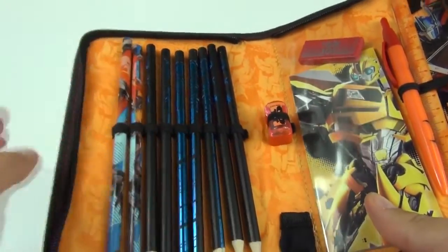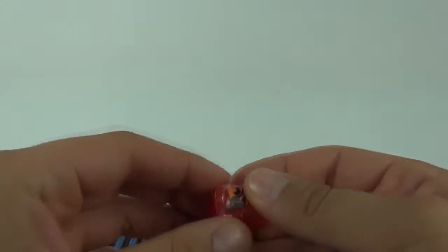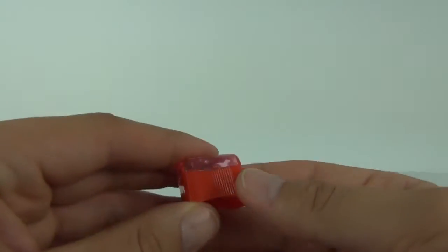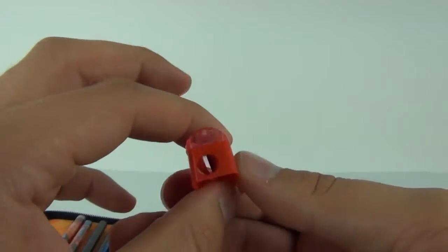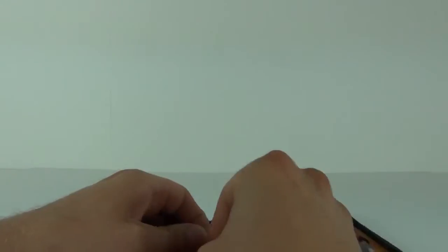Now we do also get the pencil sharpener with the removable top there, and that is quite loose actually, so you'd have to watch that. But we do all the same get the pencil sharpener, which you can again secure back into place with the elasticated piece there.